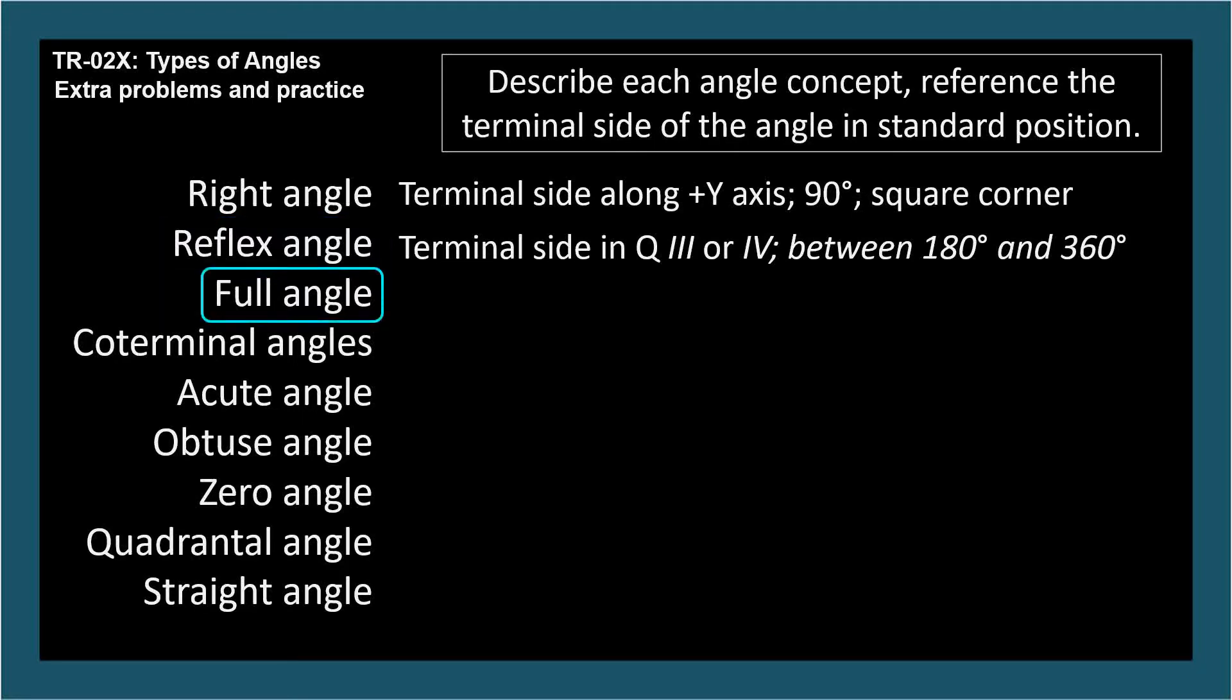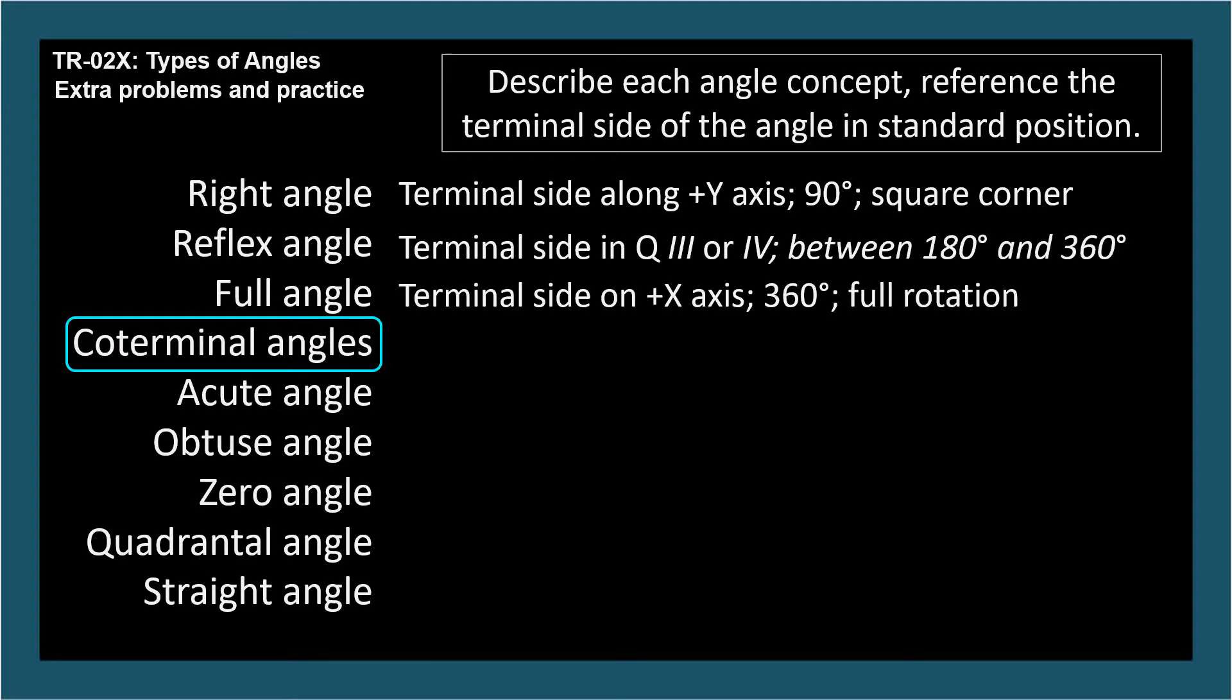Full Angle: The terminal side is along the positive x axis, 360 degrees, full rotation. Co-terminal Angles: Two different standard position angles with coincident terminal sides. There's not enough room to put it on the slide, but you can also say that they always differ by a multiple of 360 degrees.